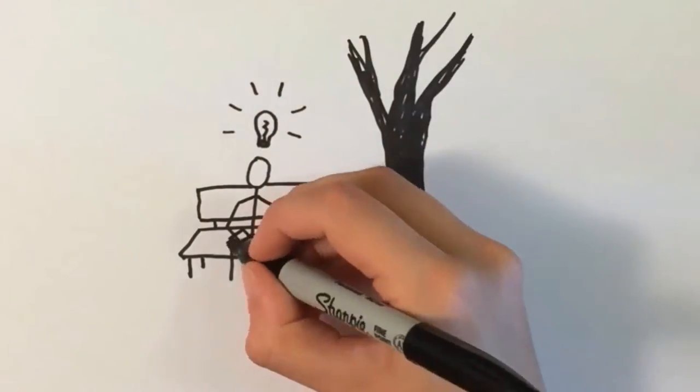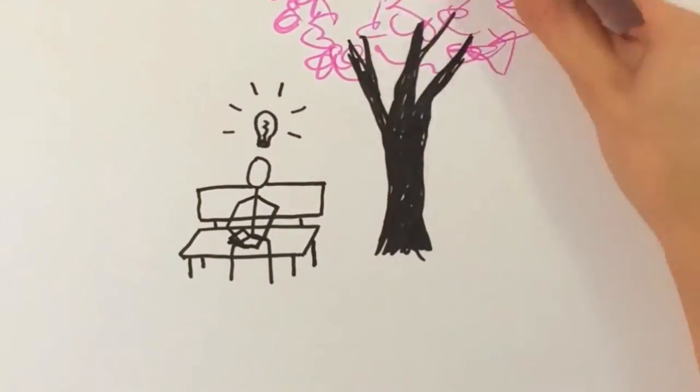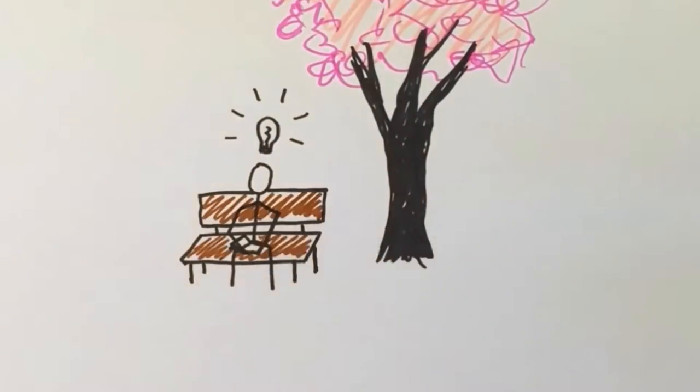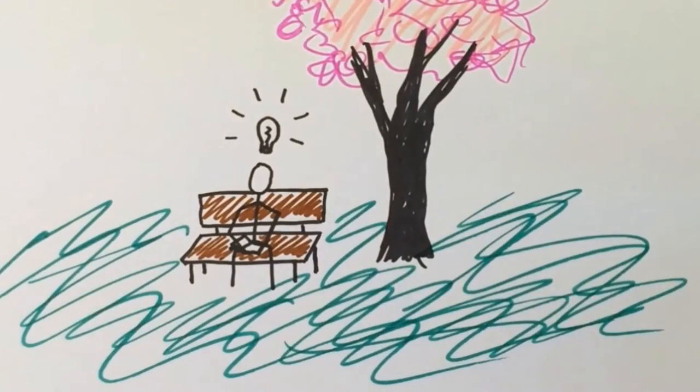He conceived the idea for the Maser in 1951 while admiring azaleas on a park bench in Washington, D.C. He referred to this moment as his aha moment.